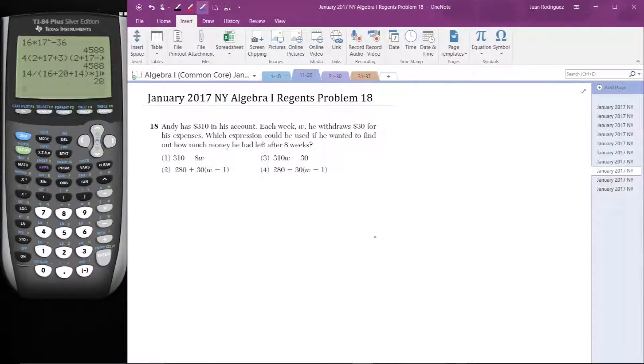Here's number 18. Andy has $310 in his account. Each week W, he withdraws $30 for his expenses. Which expression could be used if he wanted to find how much money he had left after 8 weeks? $310 minus 8W, $280 plus 30 times W minus 1, 310W minus 30, or $280 minus 30W minus 1.